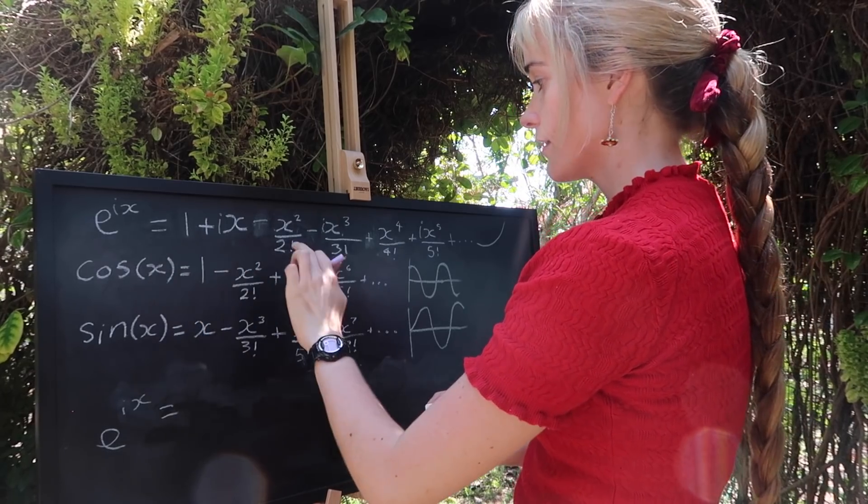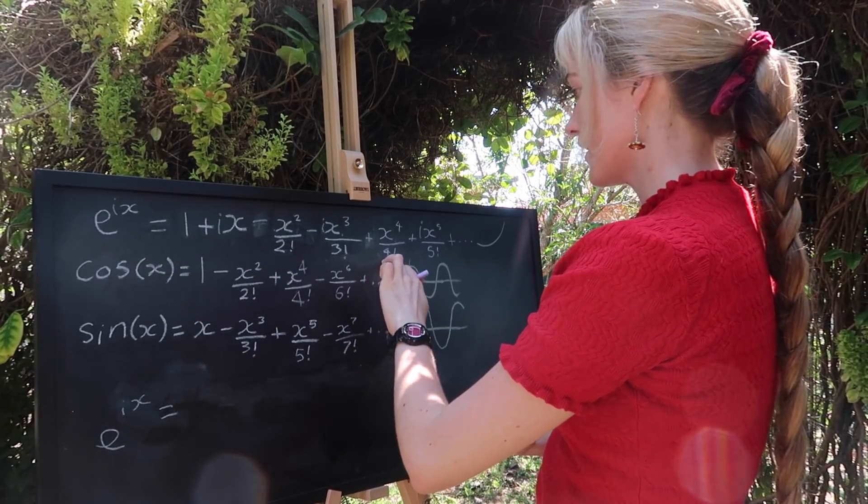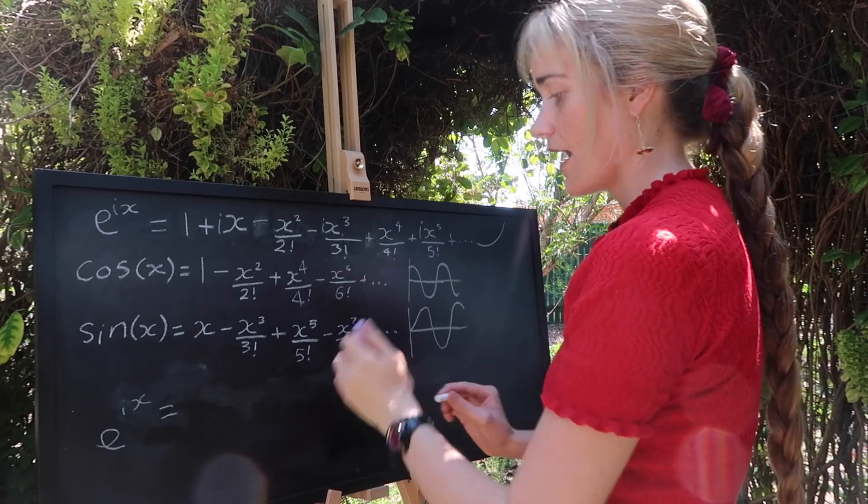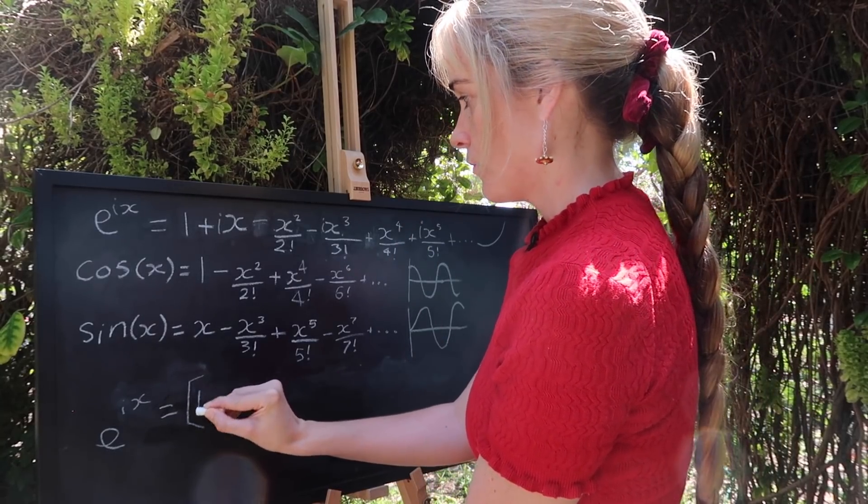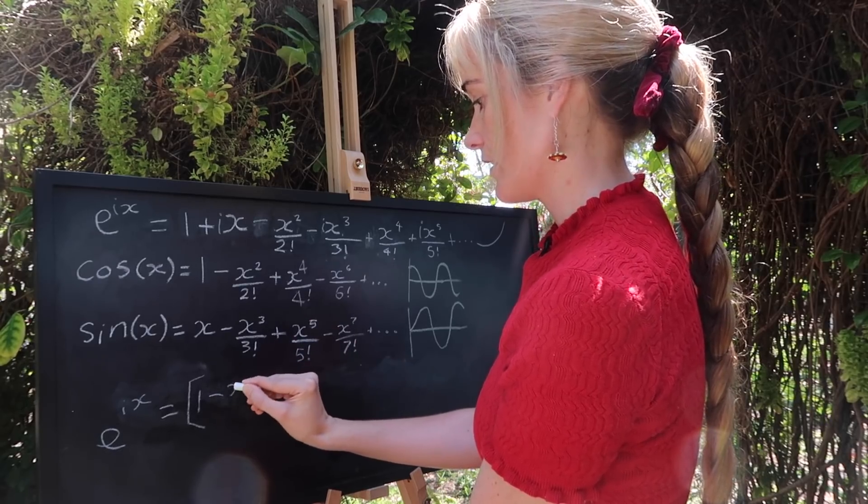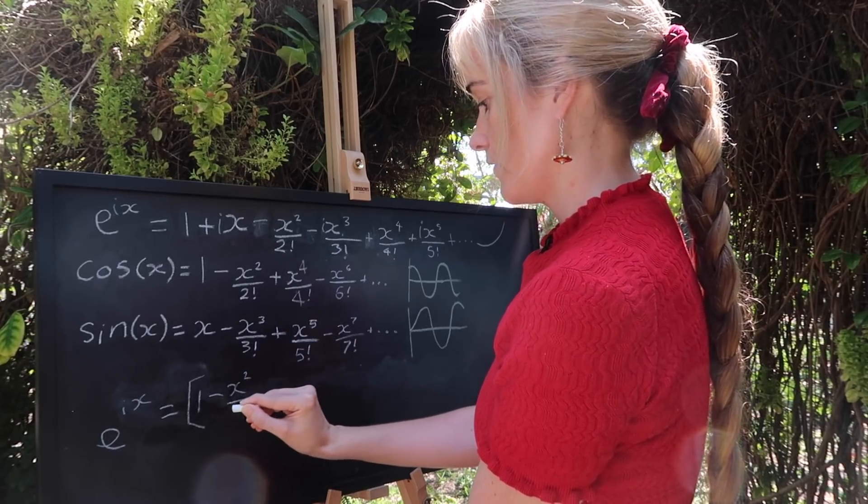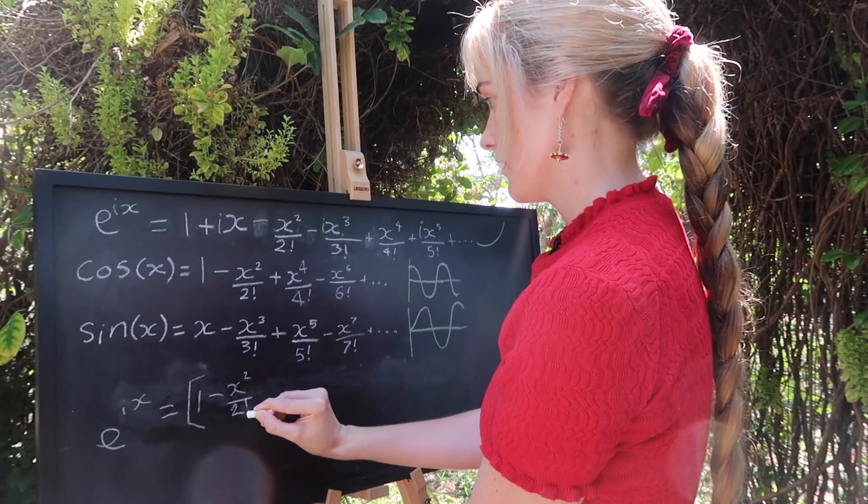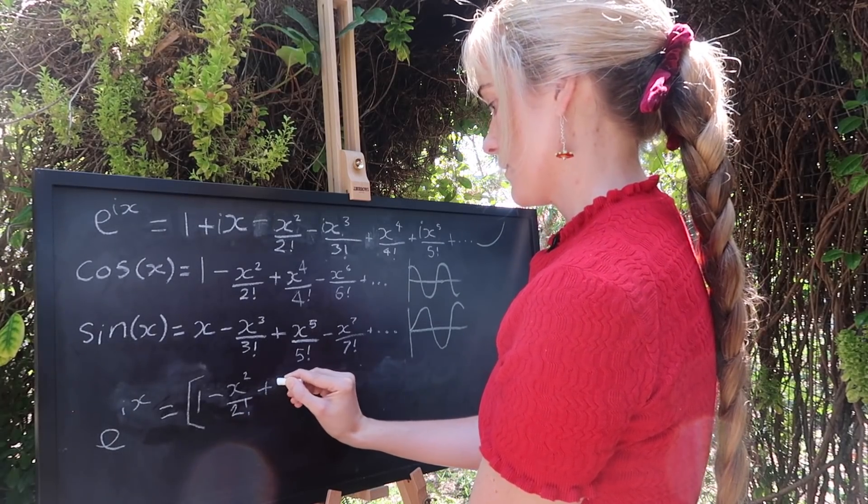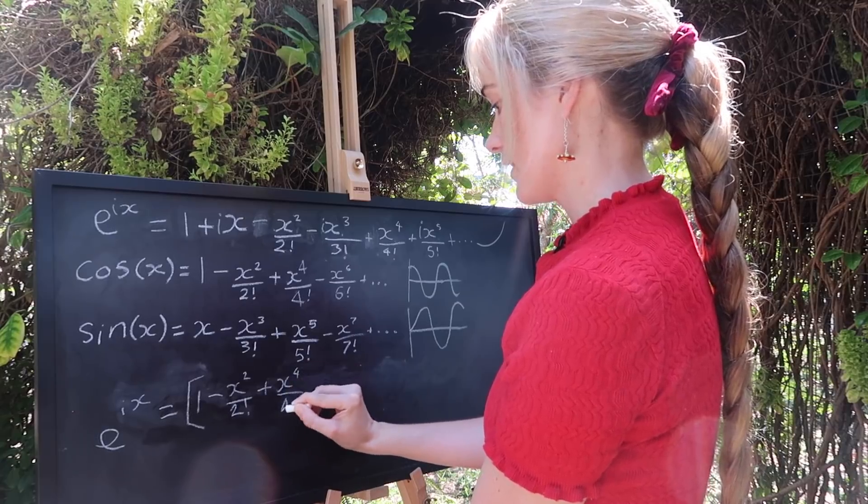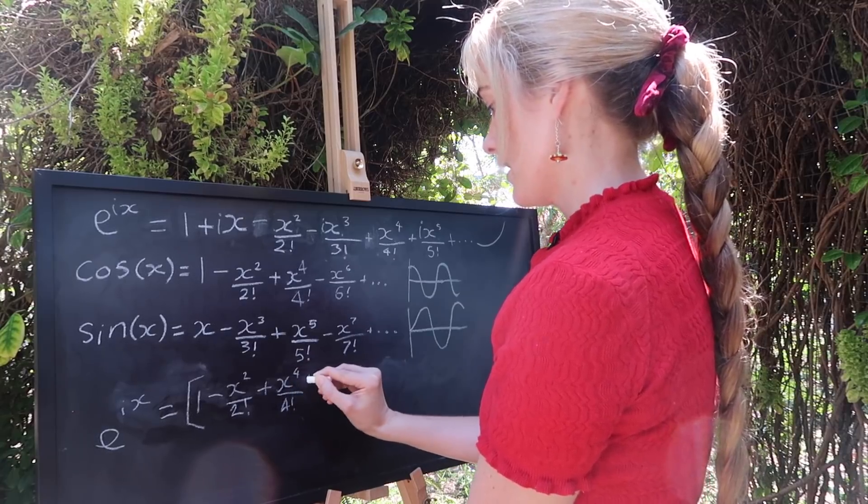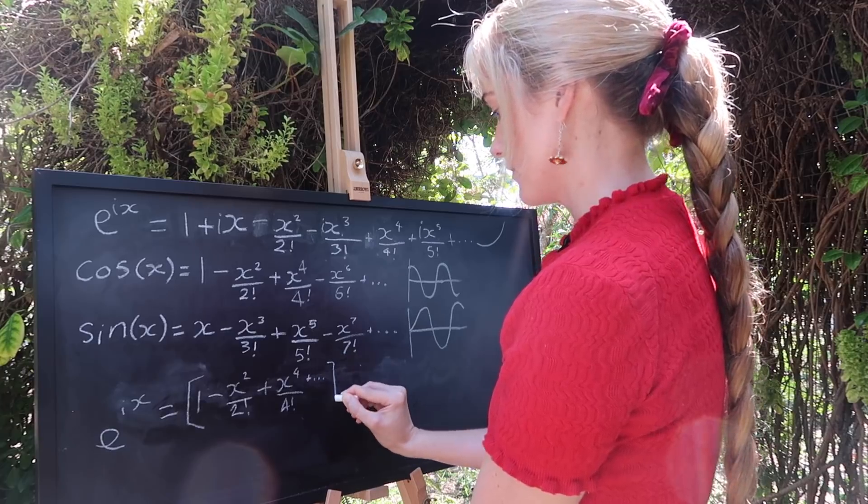Let's do the real terms first. So he's real, he's real, he's real, and I think anything that has an even power will be real. So let's put it in brackets. 1 minus x squared over 2 factorial plus x to the 4 over 4 factorial. And there's going to be an infinite number of those real terms.